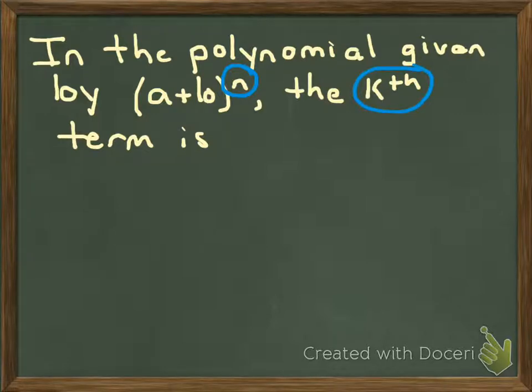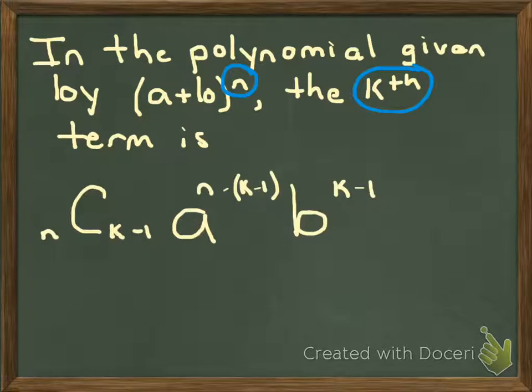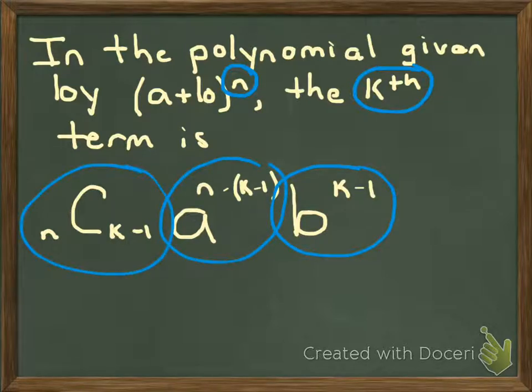And again, it looks pretty intimidating, but let's break it down piece by piece. We know that we will have some power of b, some power of a, and we will have some combination that will tie it all together. You can write this down and try to make sense of it, but I think this is easier to do just by practicing some problems. We'll come back to this formula, but let's take a look at some sample problems.